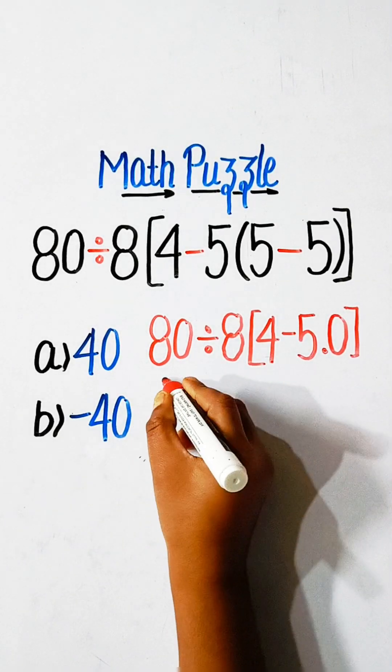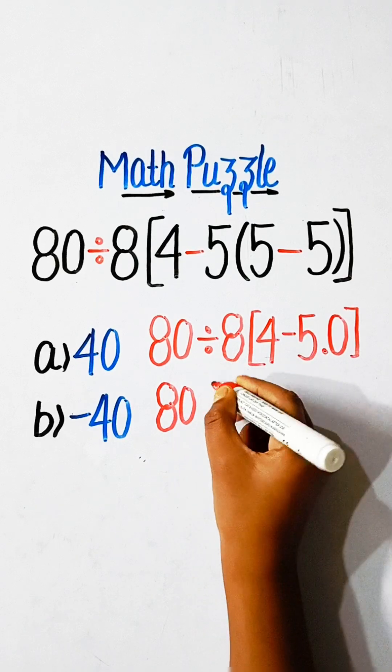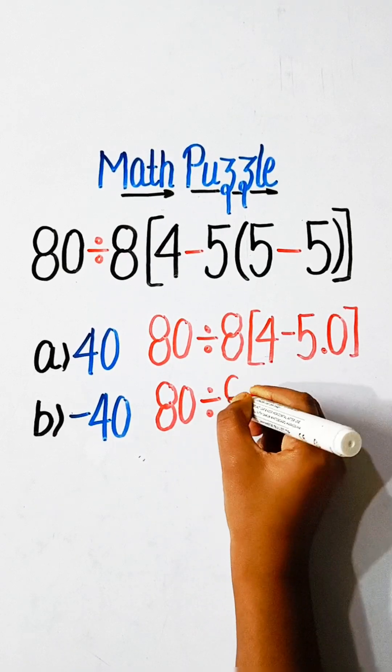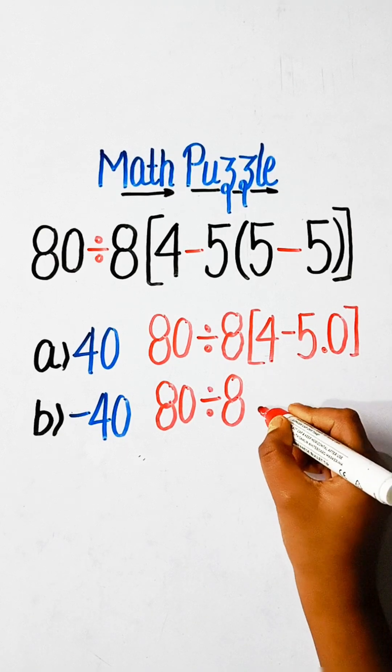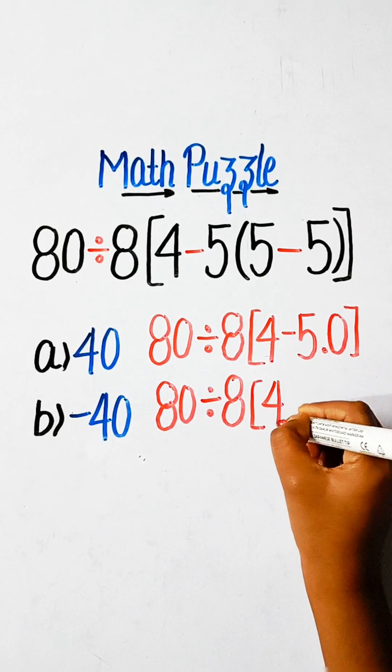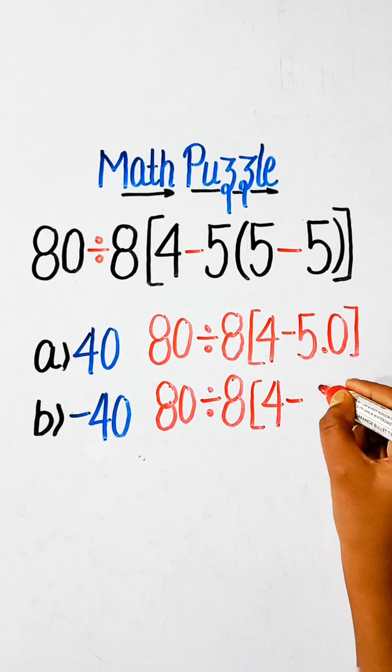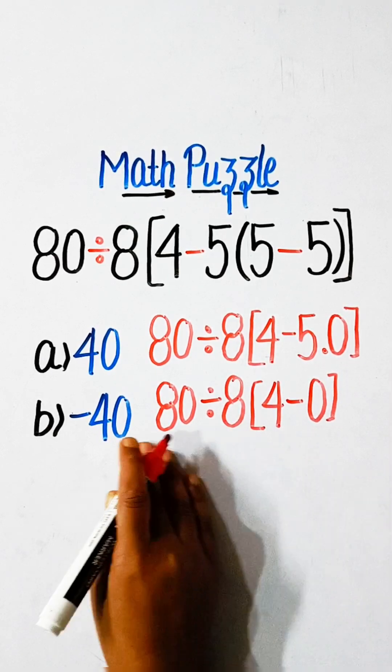So we can write here 80 divided by 8, 4 minus 5 into 0 is 0. So we can write here 0.